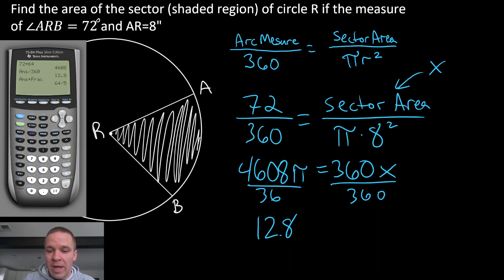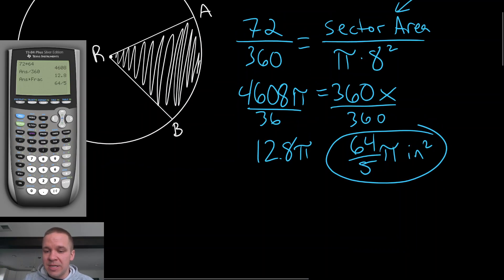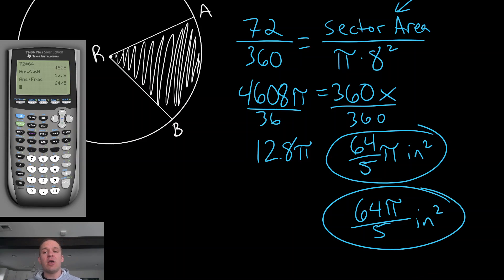So my final answer here will actually be, instead of 12.8 pi, we're gonna do 64 over five pi, and that would be inches squared. That would be my final answer, or I could write this as 64 pi over five inches squared. Either one of those is fine. You should be fluent in both, just in case it's a multiple choice question or something like that, but that would be my sector area in terms of pi.